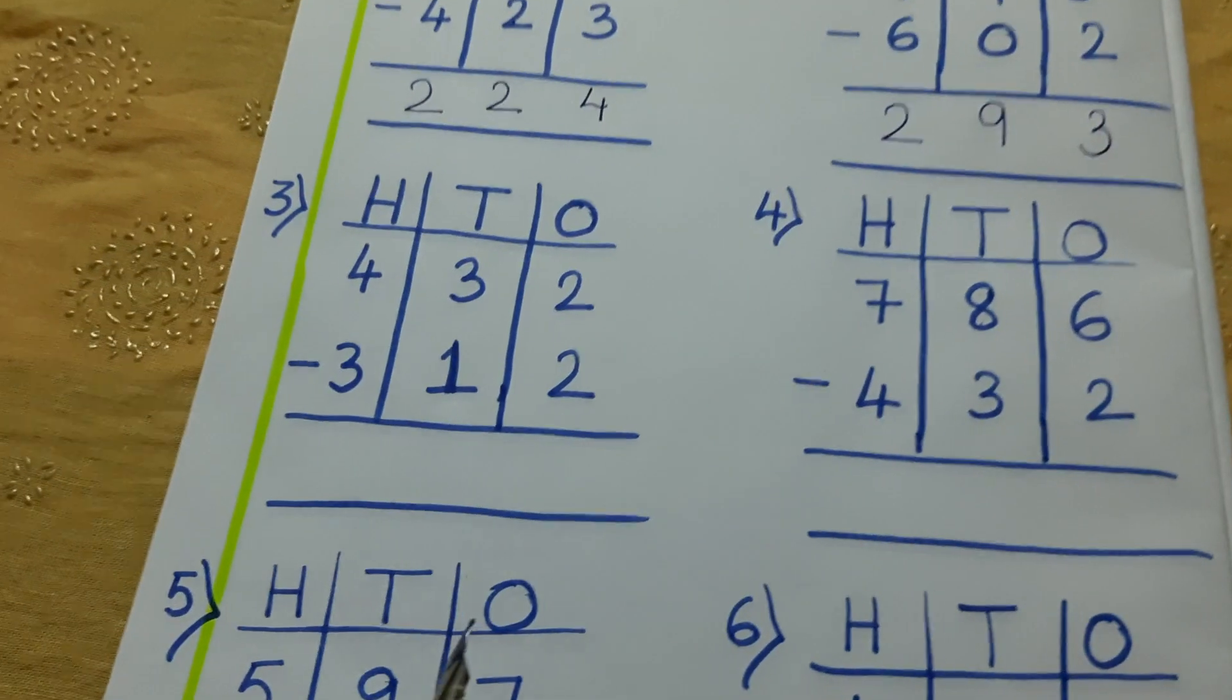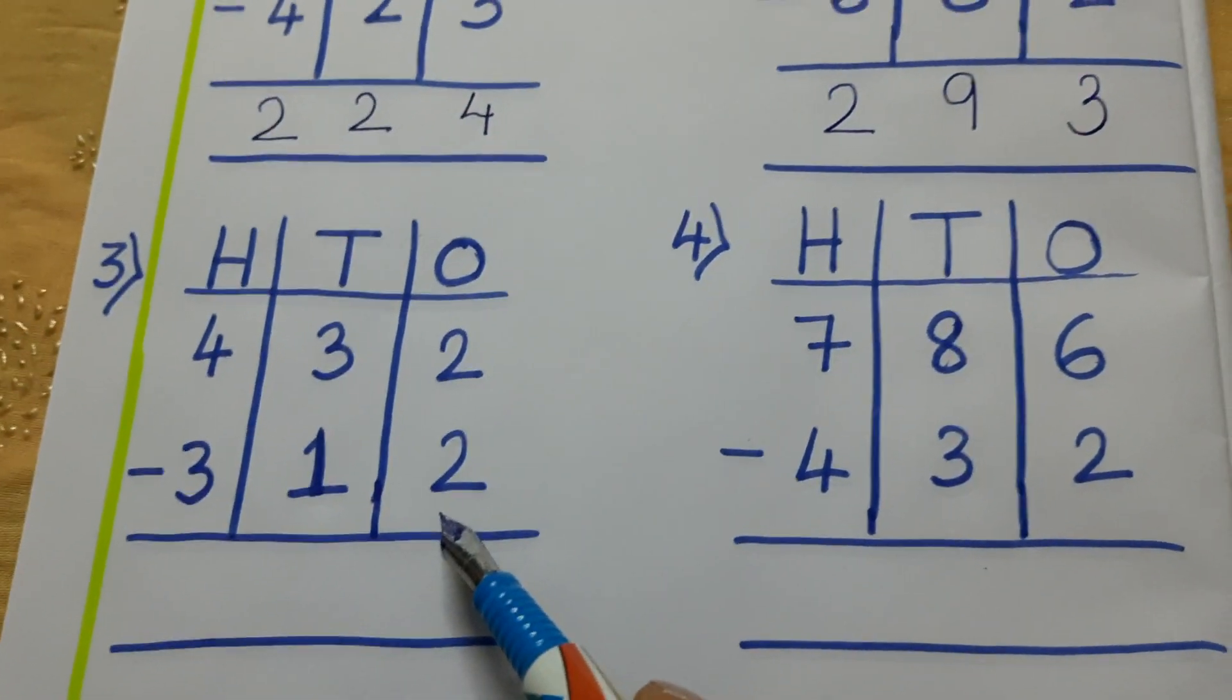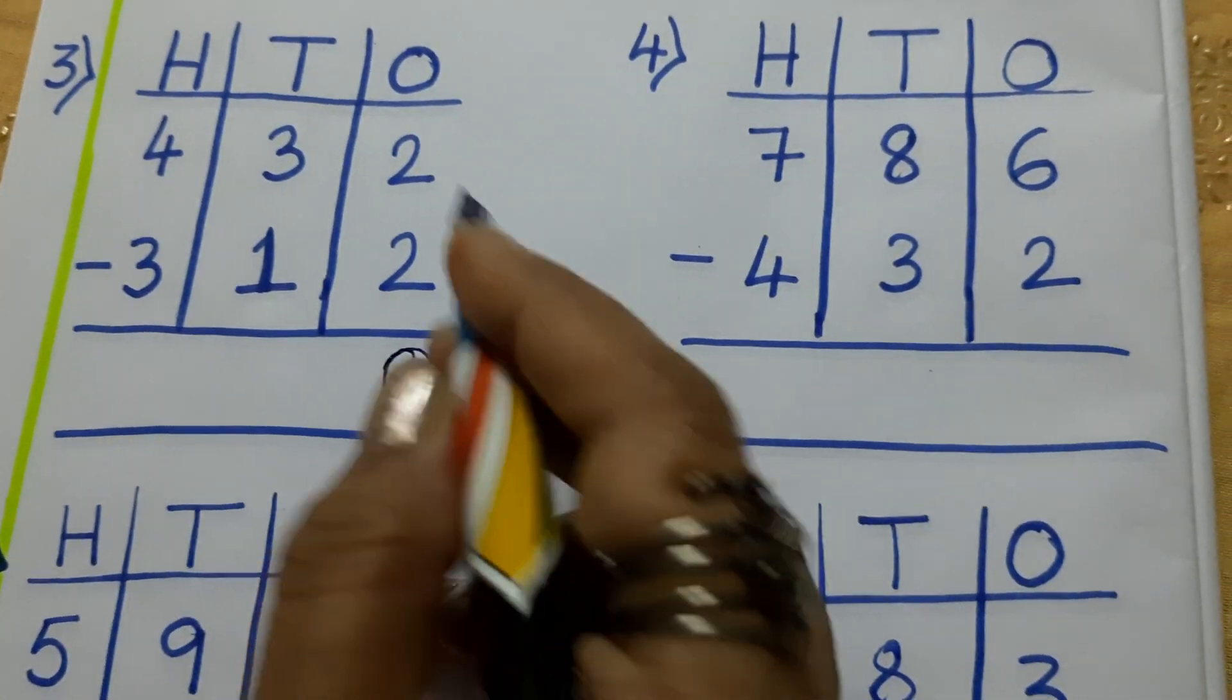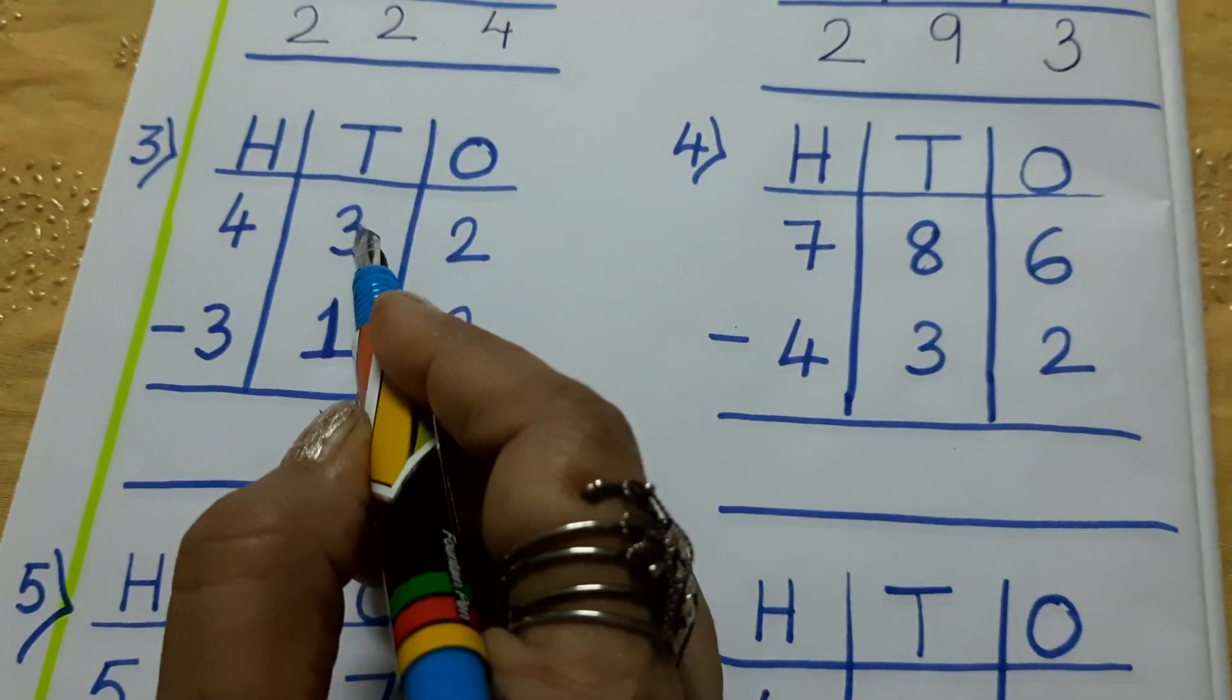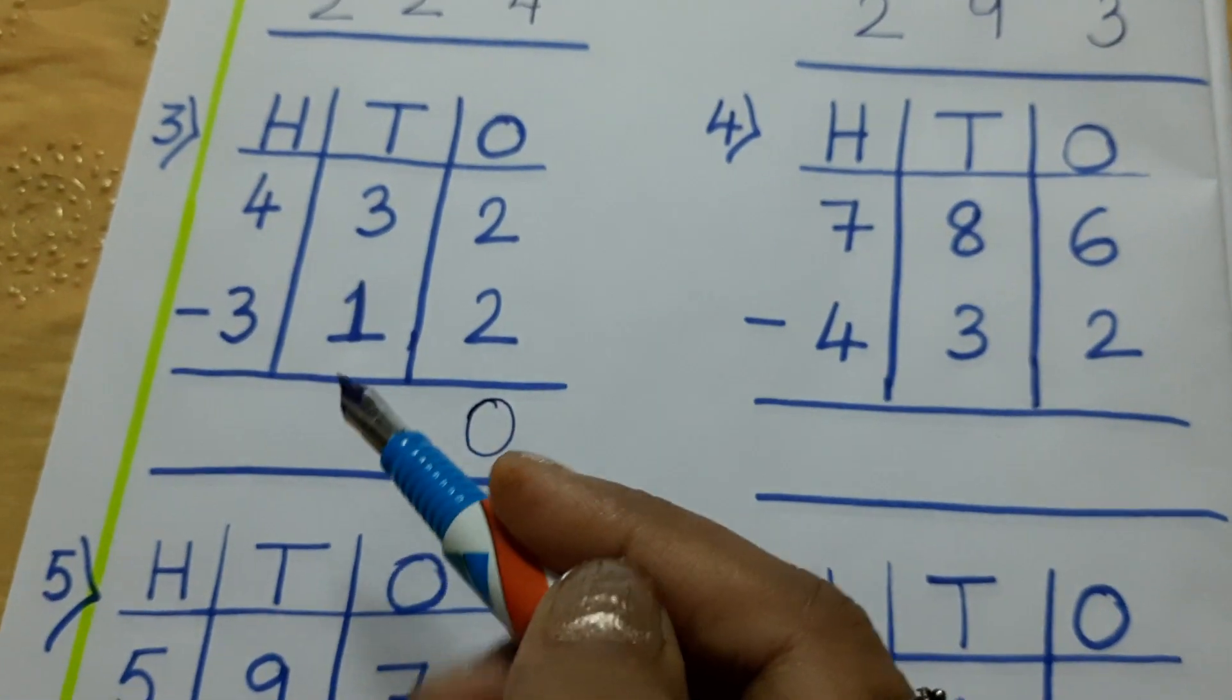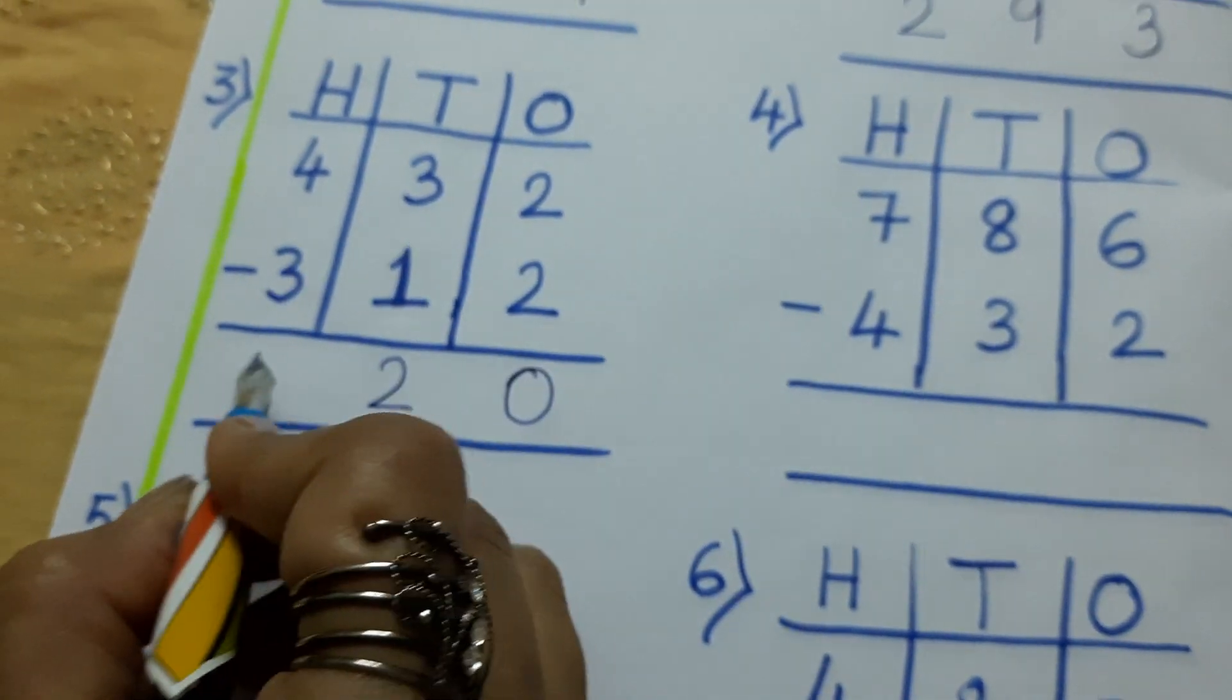Next. Here you see in 1s 2 minus 2. 2 minus 2? Yes, 0. Always remember this. Any number minus the same number, if we do the minus, it is 0. Nothing is left. Then 3 minus 1. This I will not count. In your mind you say 3 minus 1. It is 2. 4 minus 3? It is 1.